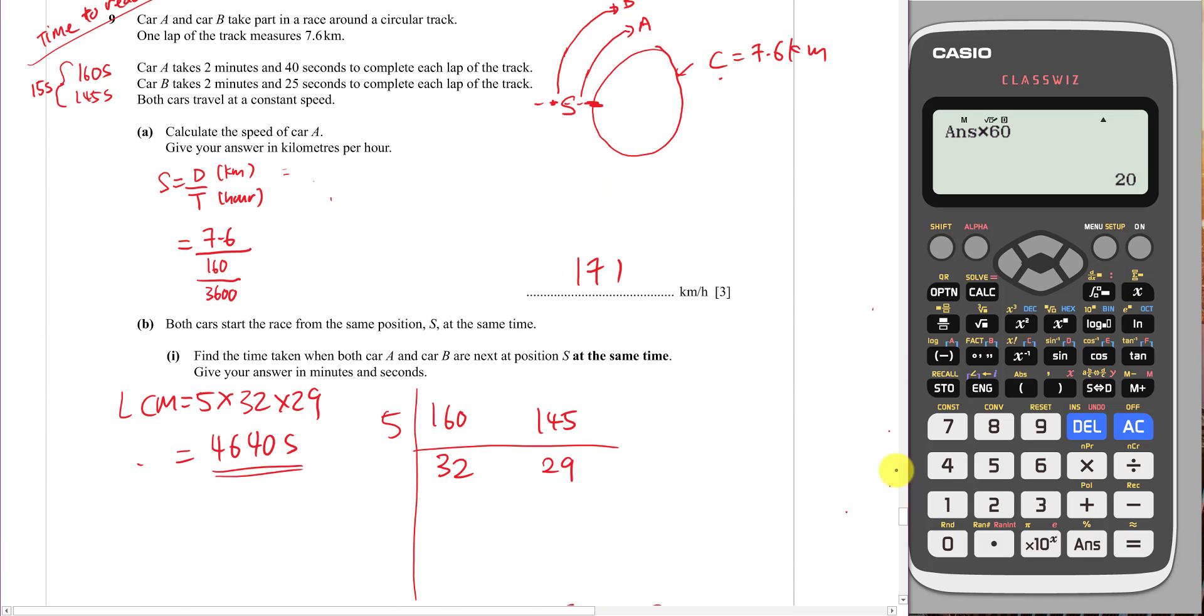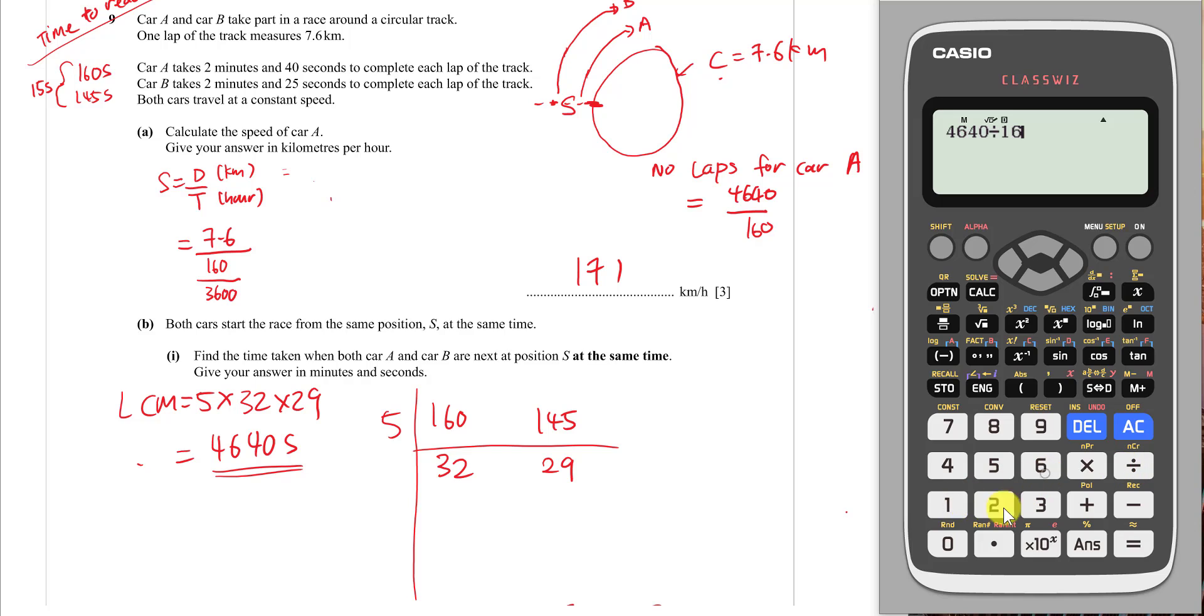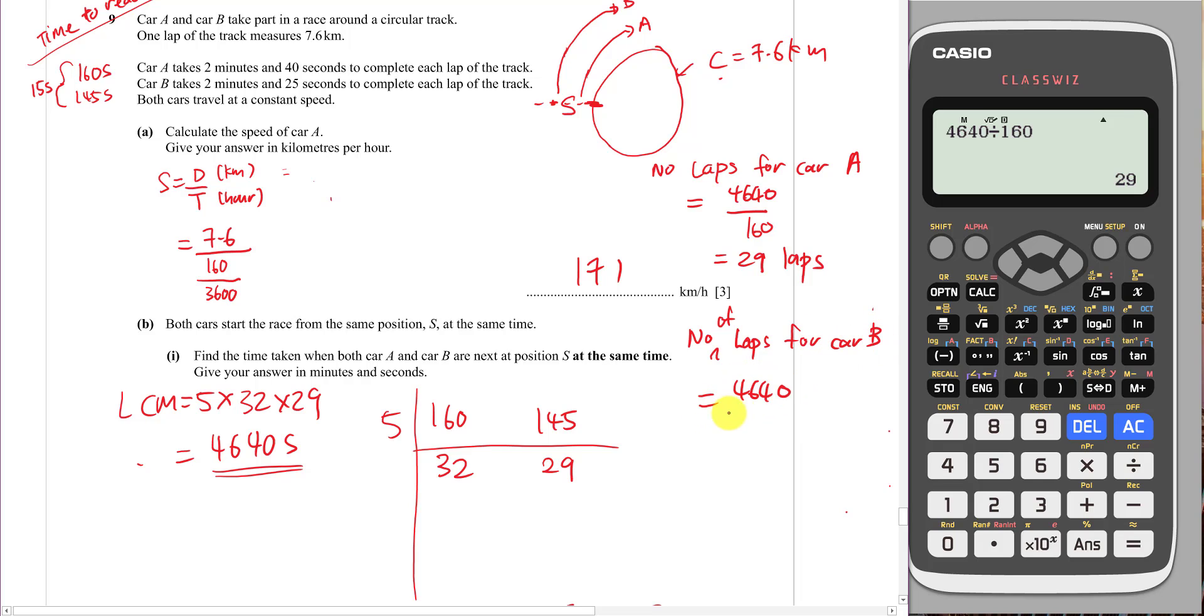This is how I change 4640 into minutes and seconds. This makes sense. If you go back to the question and look at the number of laps for car A: I can use 4640 divided by 160 seconds. So 4640 divided by 160, then I know car A actually rotates 29 laps. Then for the number of laps for car B, I use 4640 divided by 145. That's 32 laps.